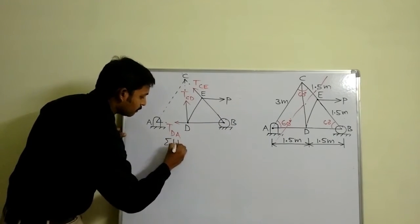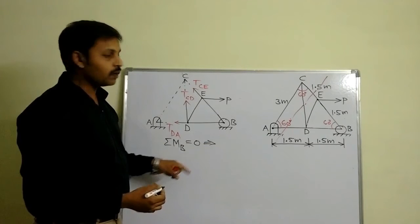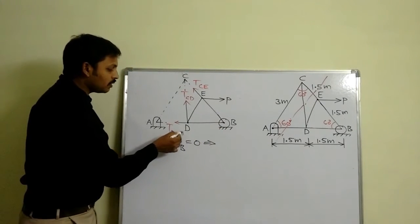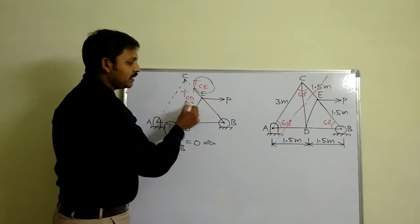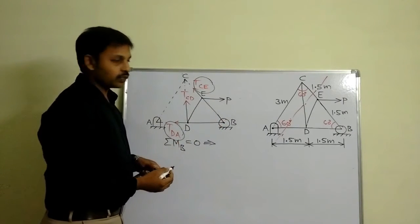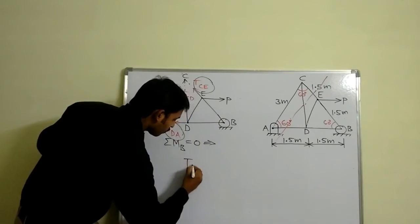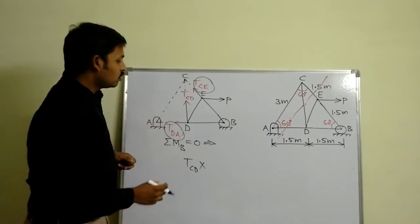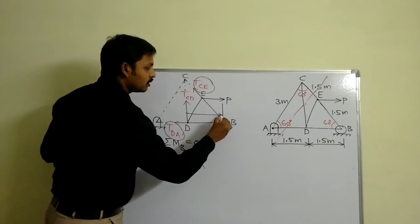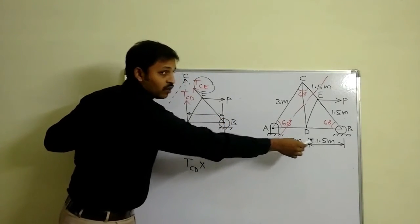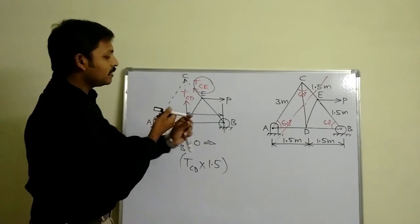The equation is sigma M_B equals zero — the algebraic sum of moments about moment center B equals zero. When I consider B as the moment center, I can eliminate TDA and TCE. The remaining forces are TCD and P — just two forces. For TCD, the perpendicular distance is given as 1.5 meters in the question. The moment center is on the right-hand side.